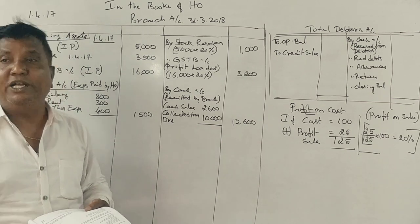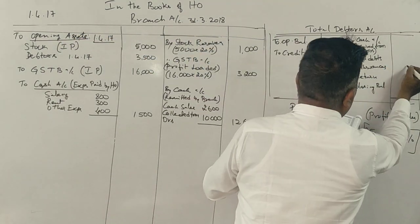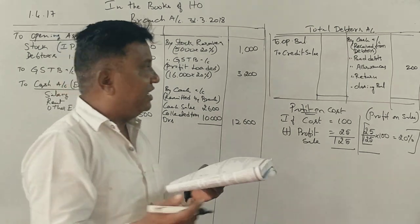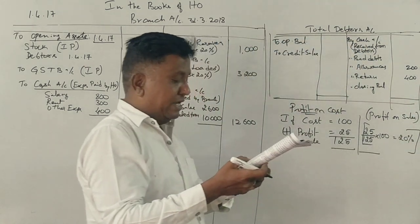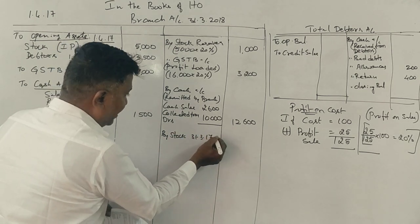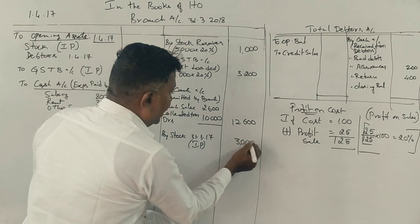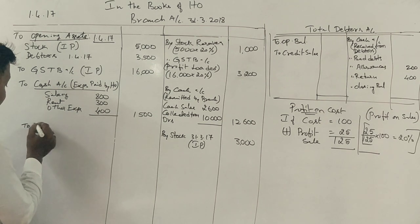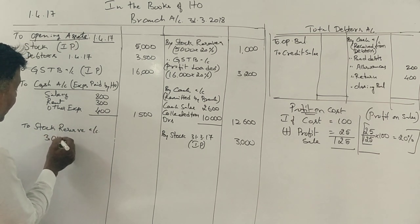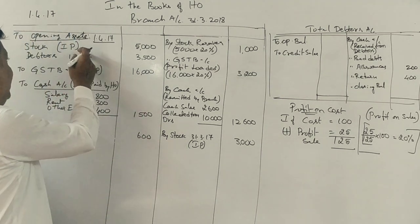Next, discount allowed to debtors. Goods returned by customers: 400 rupees total. Next stock closing balance, stock on 31st March at invoice price 3,000 rupees, transfer to stock reserve account 3,000 into 20% equals 600 rupees.